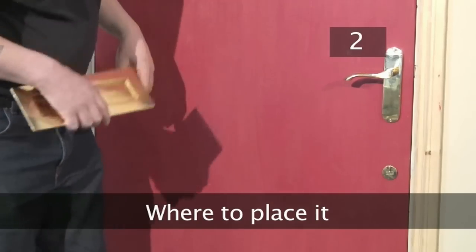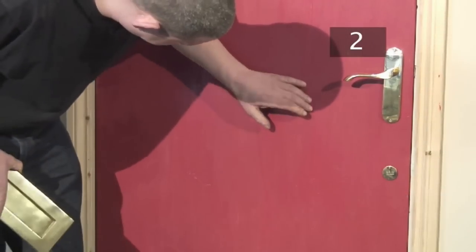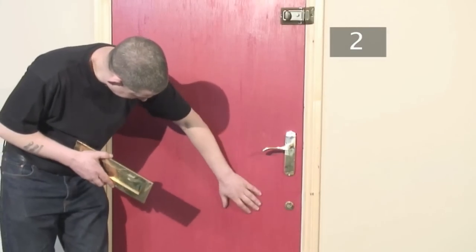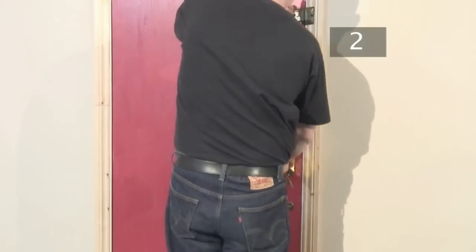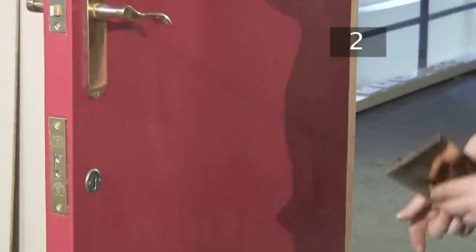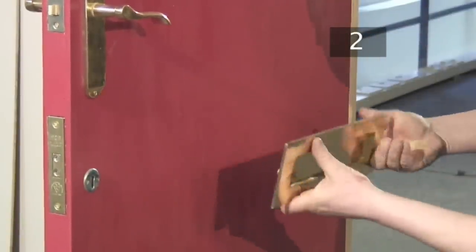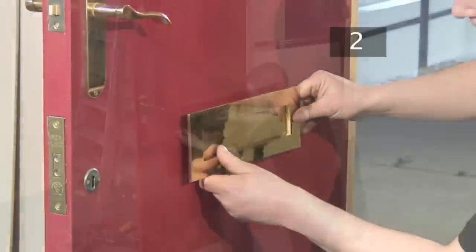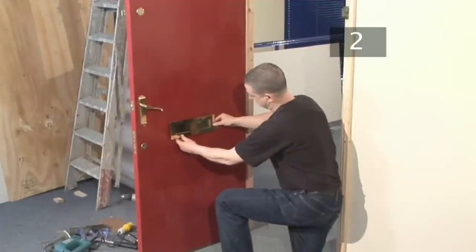Step 2. Where to place it. If your door is paneled, you must fit your letterbox to a strong, non-paneled section of the door. This is a solid wood door, so the letterbox can go anywhere. We're going to fit it in the center of the door, just below the door handle.